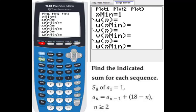Then we'll get second 7, that's u. Then it's n minus 1, that means u sub n minus 1. Then plus parentheses 18 minus n, and u sub 1 will be 1.